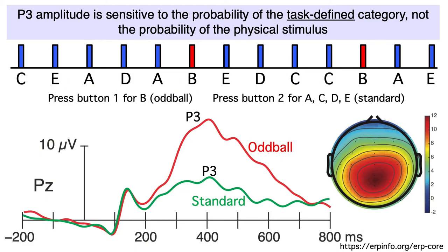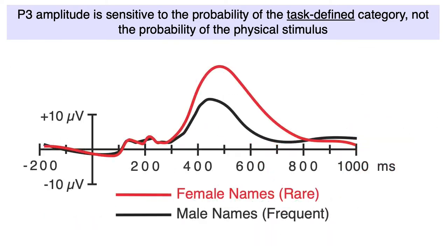In the ERP core, for example, we got a bigger P3 for the target letter B than for the standard letters, even though each individual letter — A, B, C, D, and E — appeared on 20% of trials. Here's what the results of the Koudis study looked like. These aren't the real data; the original paper didn't provide a figure overlaying the targets and the standards. But this is approximately what they found.